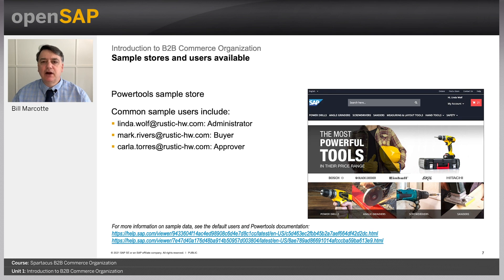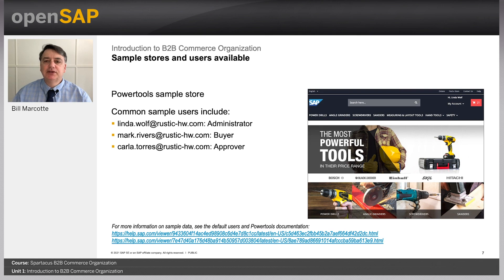I'm going to demo very quickly the administrative part of B2B Power Tools as an introductory step — I'll go into more detail in later units. When you install B2B Commerce Organization with SAP Commerce Cloud it includes sample data, so you don't have to build everything from scratch. You have sample users and sample companies to use. This is one of the users known as the Rustic Hardware people, and there's documentation on help.sap.com describing all these users and their roles. Common users in these courses are Linda Wolf, who's an administrator, Mark Rivers who's a buyer, and Carla Torres who's one of the approvers.